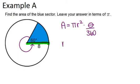So, we know that the radius is 8, so we can plug in 8 for the radius, and our central angle is 60 degrees. So, once we calculate this, we'll have our area.